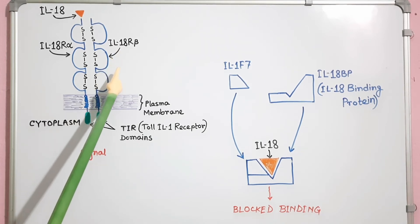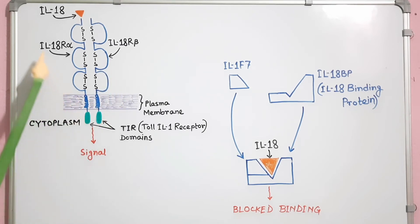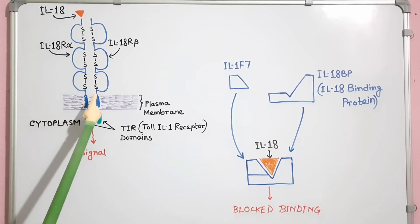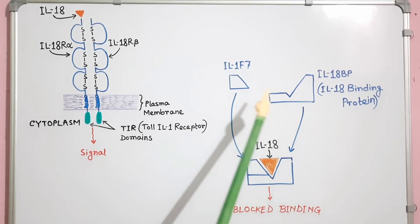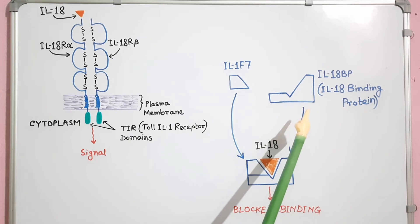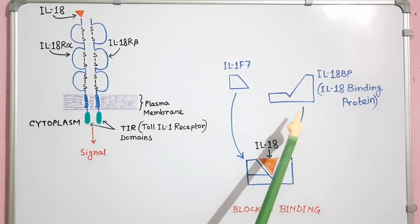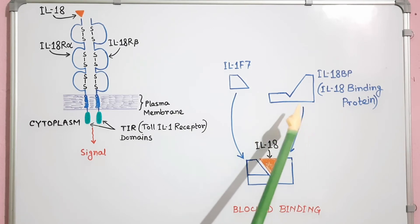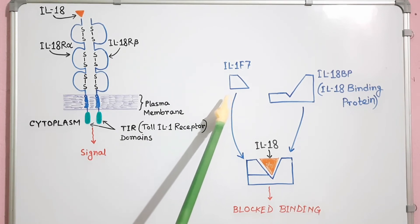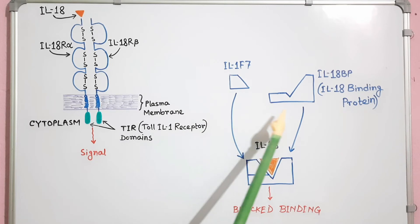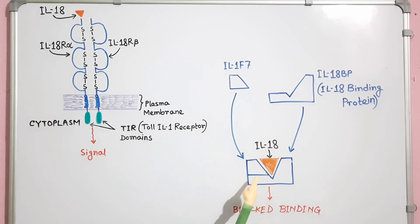Activation of IL18R alpha leads to formation of a heterodimer with IL18R beta, mediating intracellular signal transduction, where IL18R beta acts as the co-receptor. The activity of IL18R can be regulated by interleukin-18 binding protein (IL18BP), a soluble protein that functions as an inhibitor to IL18R beta. The inhibitory action of IL18BP is enhanced by IL1F7 (IL-37). IL18BP binds IL-18 in the fluid phase and prevents its interaction with the IL18R alpha chain.